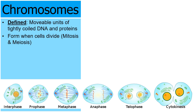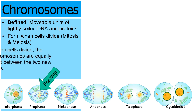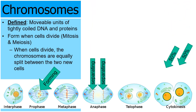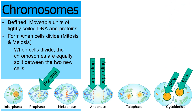Chromosomes tend to form when cells divide — through either mitosis or meiosis. Here we see the chromosomes forming. As cells continue through mitosis and meiosis, the chromosomes will be equally split between the new cells. By the end, 50% of the chromosomes will be in the cell to the left and 50% in the cell to the right. Chromosomes are movable units of DNA.